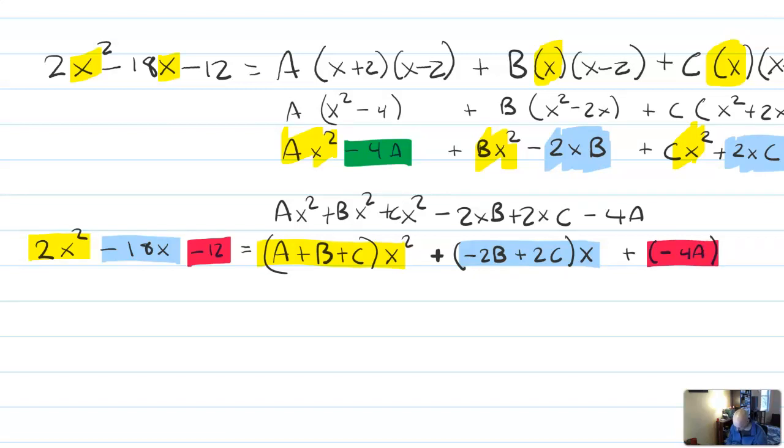So I can write three equations from this. a plus b plus c equals 2. Minus 2b plus 2c equals negative 18. And negative 4a equals negative 12.